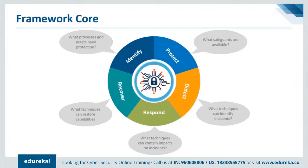The core asks an organization to identify what processes and assets need to be protected, then find what protection is available, identify techniques that can detect threats and contain the impact of an incident, and finally define what techniques can restore the capabilities of the organization before the attack. Now let's dive deeper into the functions to see what they actually do and what purpose they serve.